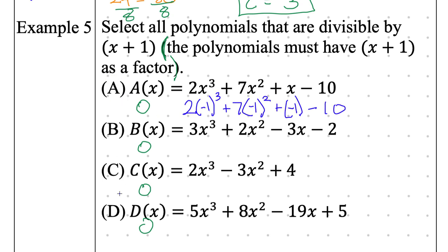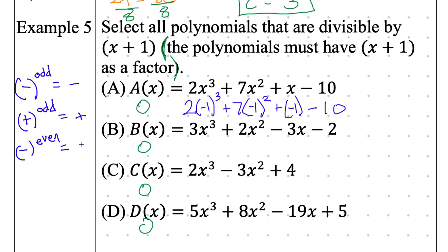I'm going to do some quick math. Whenever I have a negative to the power of an odd, that's going to be negative. A positive to an odd is positive. A negative to an even power is positive. A positive to an odd power is positive. That's your quick little cheat sheet — you know just based on the signs, then you can ignore the signs and focus on the numeric answer.